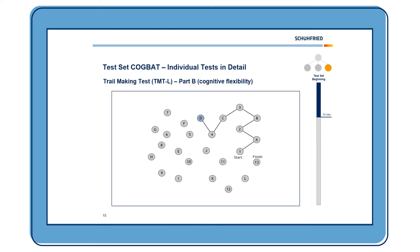Then we have the second part of the Trail Making Test, which measures cognitive flexibility. The instructions are similar but a little different — we now also have letters on screen, and the task is to connect numbers with letters alternately: first 1, then A, then 2, then B, then 3, then C, and so on.